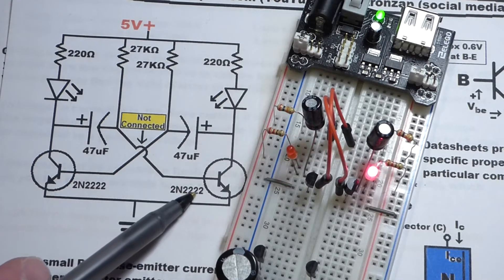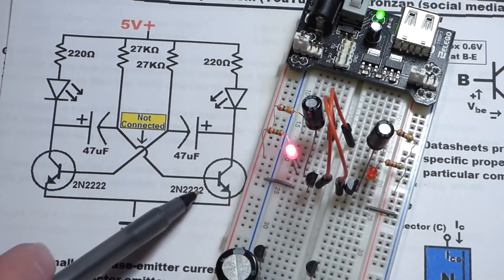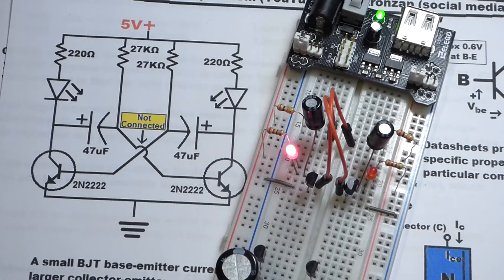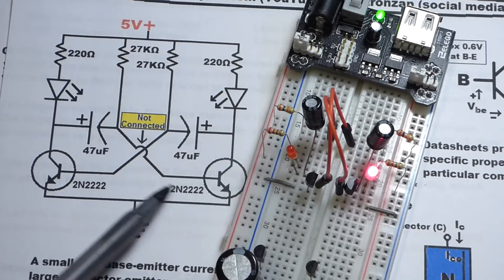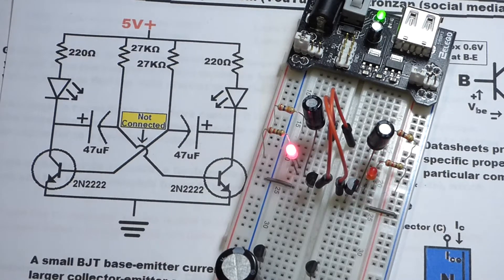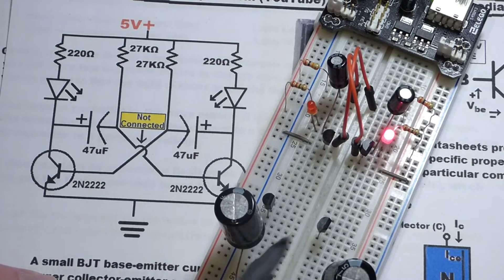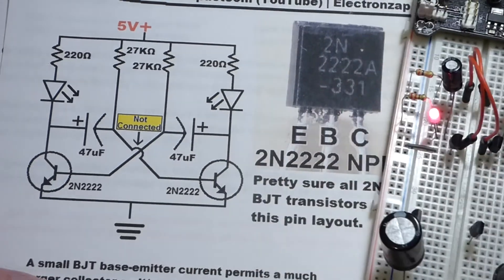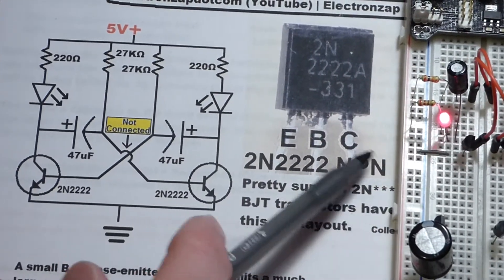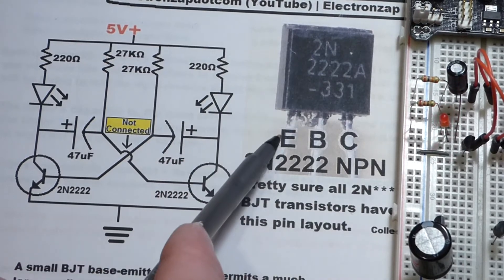As you can see here, 2N2222. These have an A after the 2N2222, so 2N2222A, but it works just the same as any other 2N2222 transistor. And in fact, down here I have 2N3904 transistors. These are another common NPN-type transistor, and they have the same pin layout.